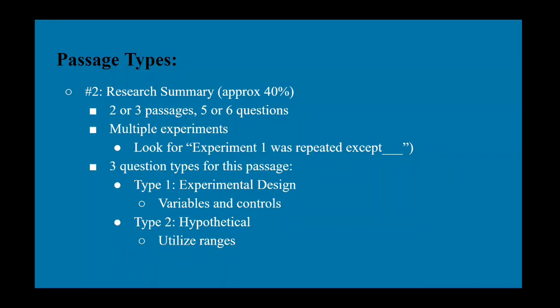There are three question types for the passage type, or two types for this passage. One is type one which is experimental design and type two is hypothetical. So you use the ranges they give you to estimate what a hypothetical data point would look like or to estimate that hypothetical.